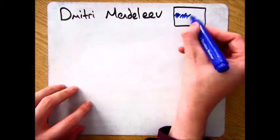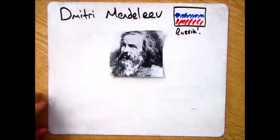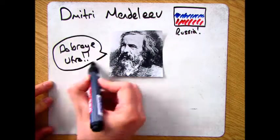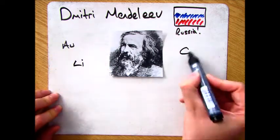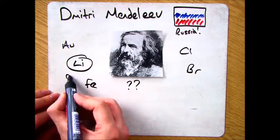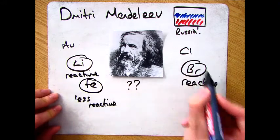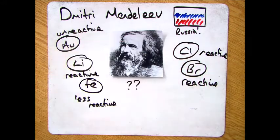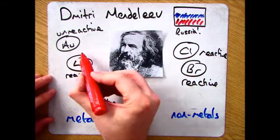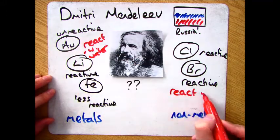Dmitry Mendelev was a Russian scientist who decided to analyze and do something about this. He did this by looking at all the different elements that were known. He'd look at the properties to see if they were reactive or not, he would look to see whether they were metals or nonmetals, and he would look to see how they reacted with different things like water.